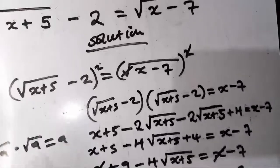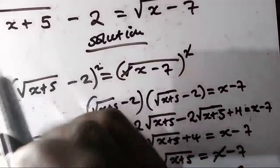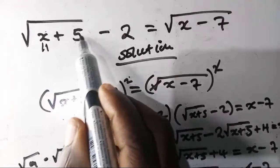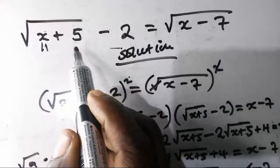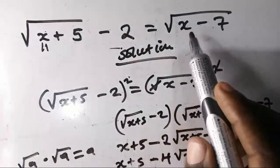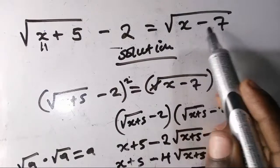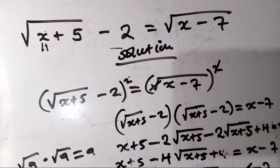You can check by plugging in: root of 11 plus 5 is root 16, which is 4. Then 4 minus 2 equals 2. On the other side, 11 minus 7 is 4, and root 4 is 2. Both sides equal 2, so x equals 11 is confirmed. Thank you for watching, don't forget to subscribe and turn on the notification bell.